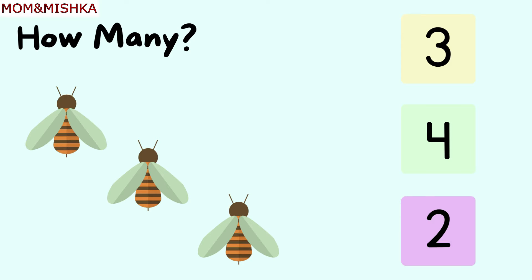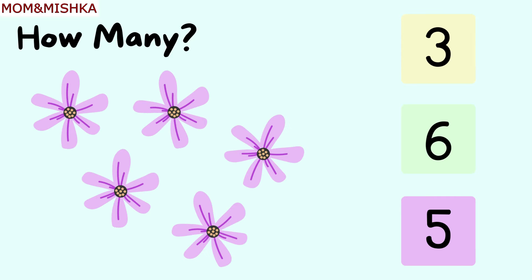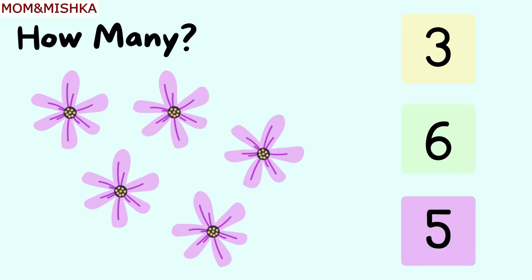How many flies? One, two, three. There are three flies. Next, how many flowers? One, two, three, four, five...